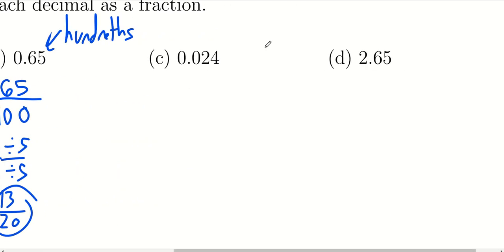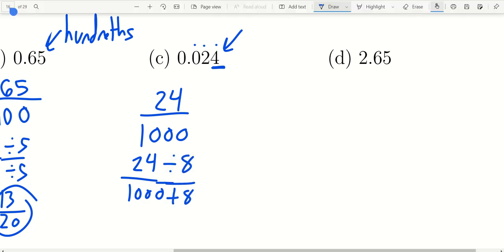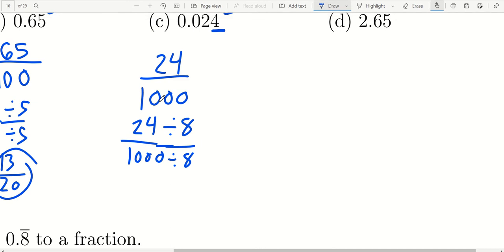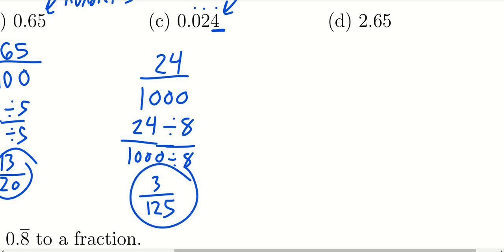For 0.024: throw away the decimal to get 24 as the numerator. The last digit 4 is in the thousandths position, so we put 24 over 1000. The GCF of 24 and 1000 is 8. Eight goes into 24 three times, and 8 goes into 1000 one hundred twenty-five times, so the reduced fraction is 3 over 125.